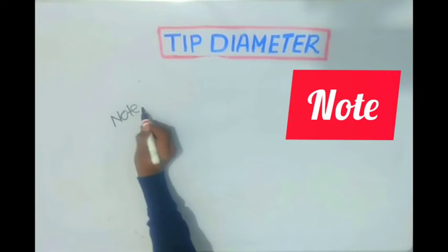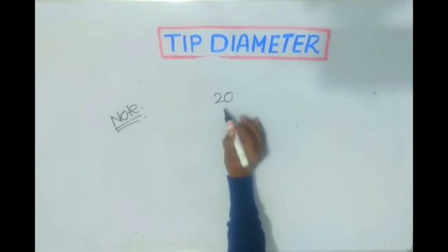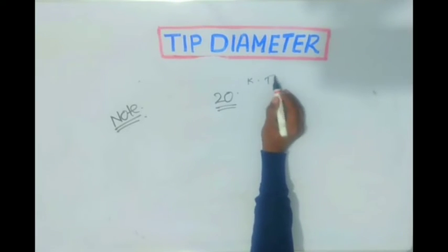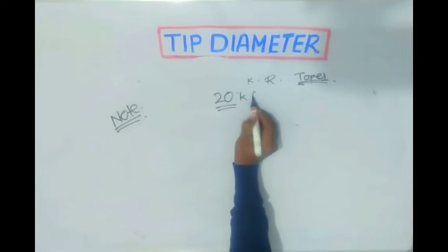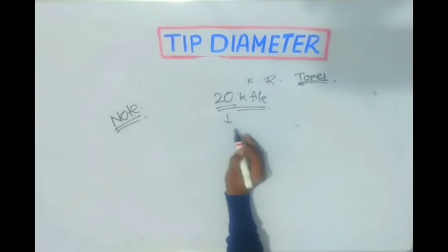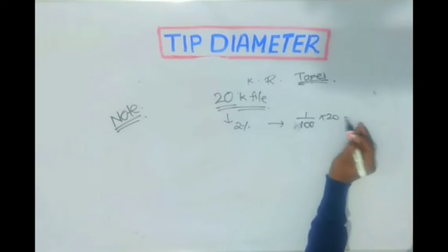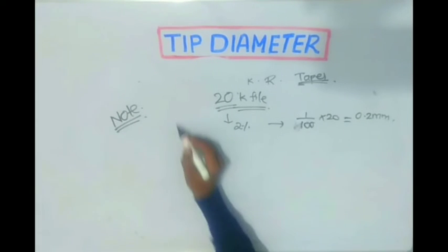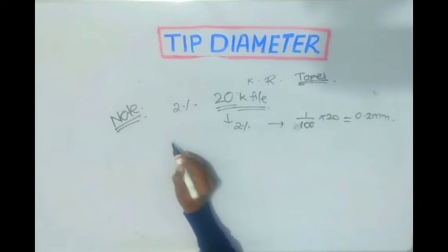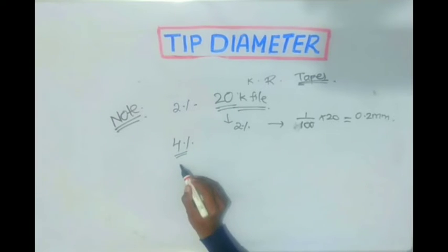Note — this is a very important point. When I say a 20 number file, I didn't mention whether it is a K-file or a rotary file, and I didn't mention the taper. If I say a 20 K-file, obviously the taper is 2%. So the tip diameter will be 1/100th times the number on the K-file, that is 0.2 mm. But what about the tip diameter of a 20 number instrument in a 4% file and a 6% file?